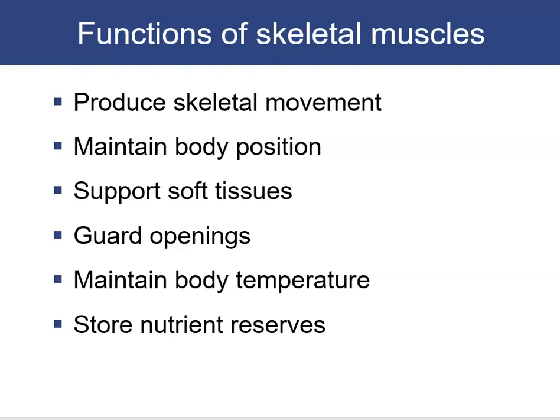Skeletal muscles guard openings: the openings of the digestive and urinary tract have a ring of skeletal muscle giving voluntary control. They help maintain body temperature — when we are cold we shiver, which is skeletal muscles contracting to produce heat. Lastly, they serve as a nutrient reserve; muscles will be broken down as a protein source when diet is deficient.